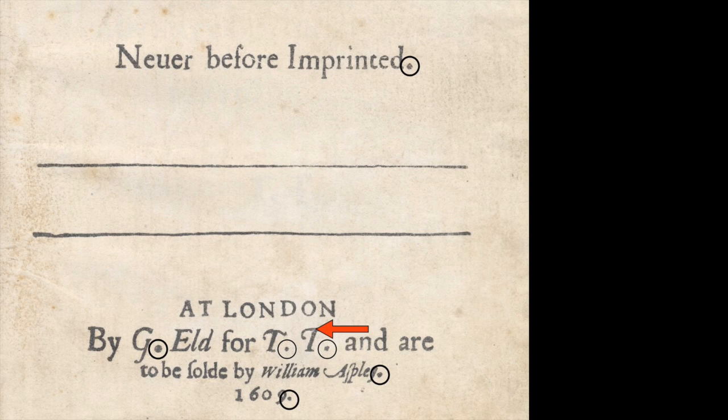Look at the italic slope of that second T. It's actually guiding us to connect this dot at 1609 to this dot at imprinted, using the sloping T as a guide.